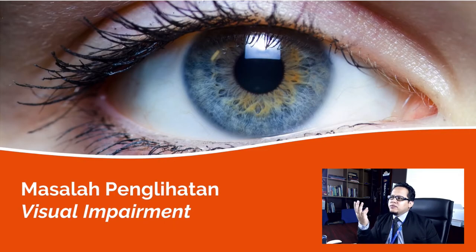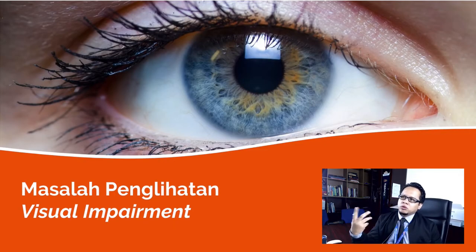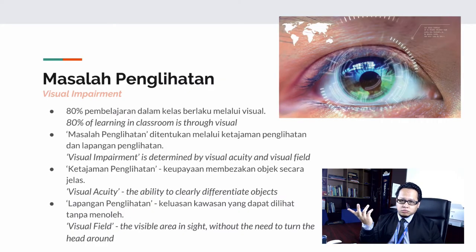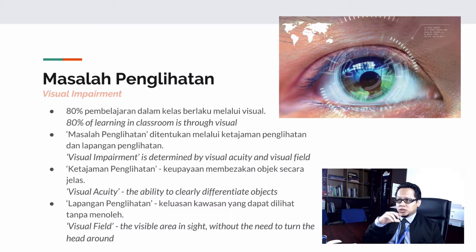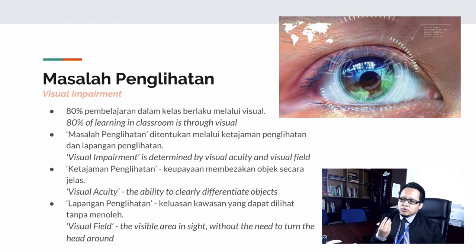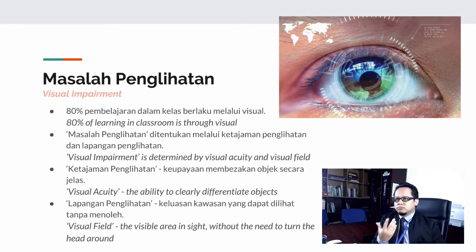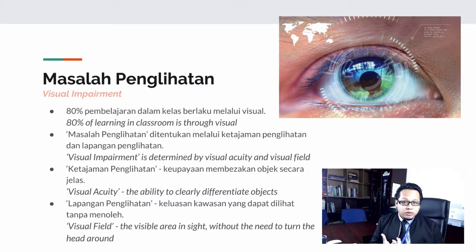Visual impairment — why does vision become the most important thing in a learning environment? For example, when you are teaching the basic things A, B, C, the students need to see what A looks like, what B looks like, and differentiate between them. The same goes for science, where students need to see what chemicals and tools they'll be handling. Visuals are one of the most important elements in learning, and 80% of classroom learning is through visual.